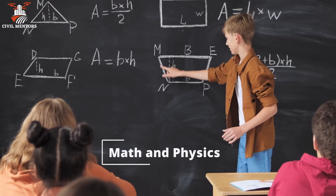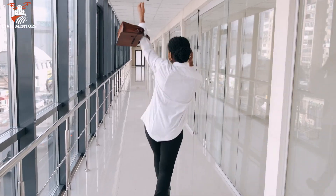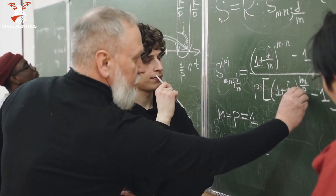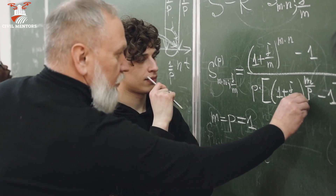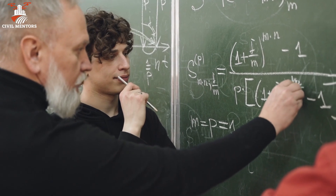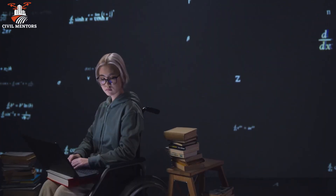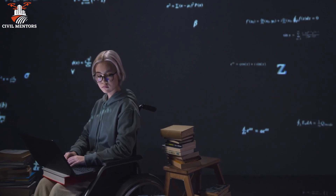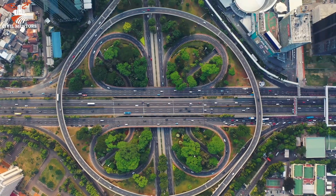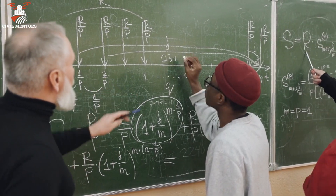Section 2: The Importance of Mathematics and Physics. To be a successful civil engineer, you must have a strong foundation in mathematics and physics. These subjects are essential because they help you understand the fundamental principles that govern the behavior of structures and materials — from calculating the loads and stresses on a building to determining the most efficient way to design a highway. Math and physics play a significant role in civil engineering.